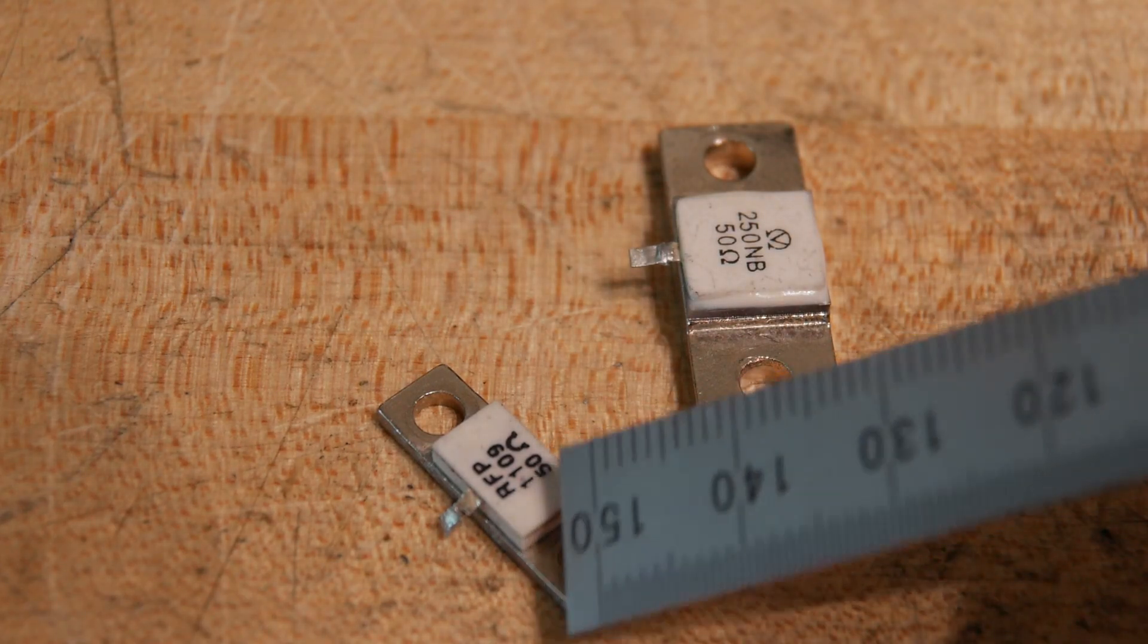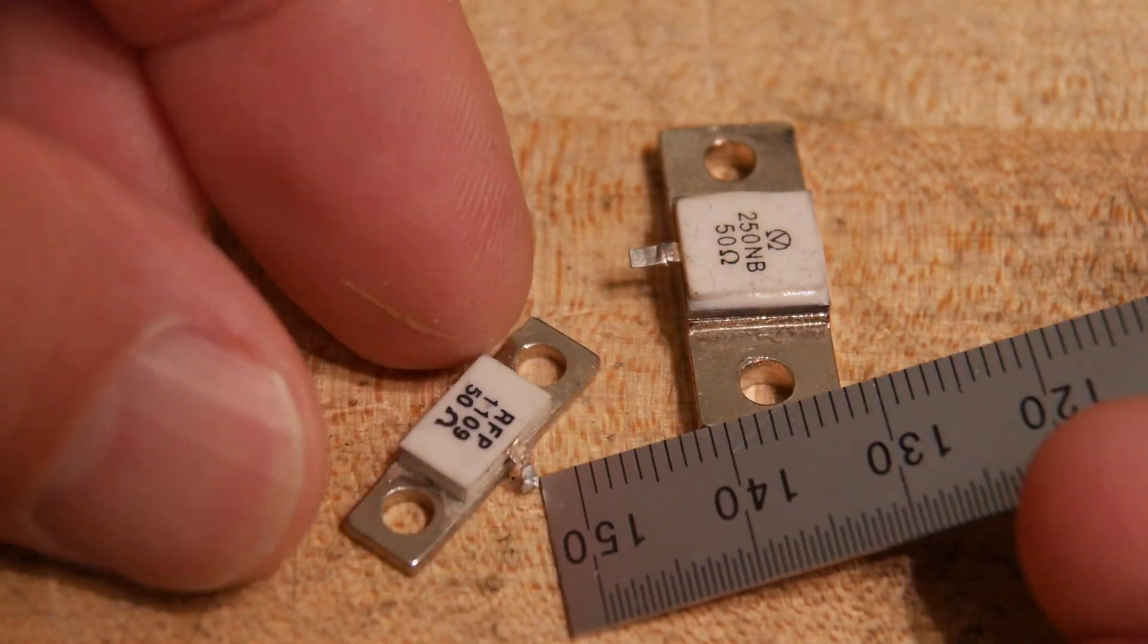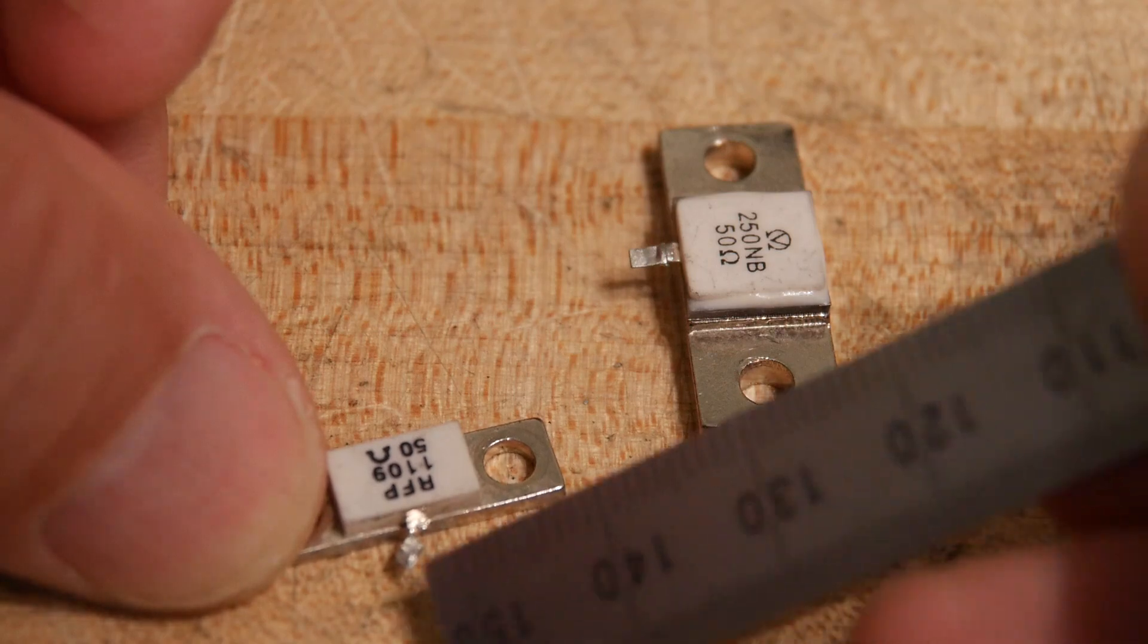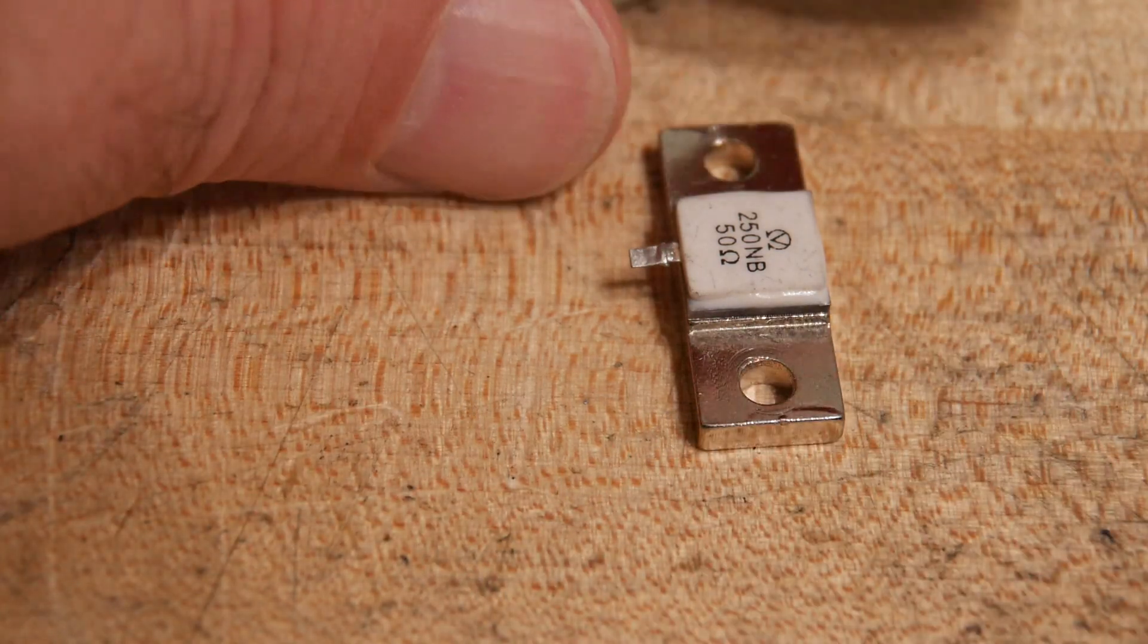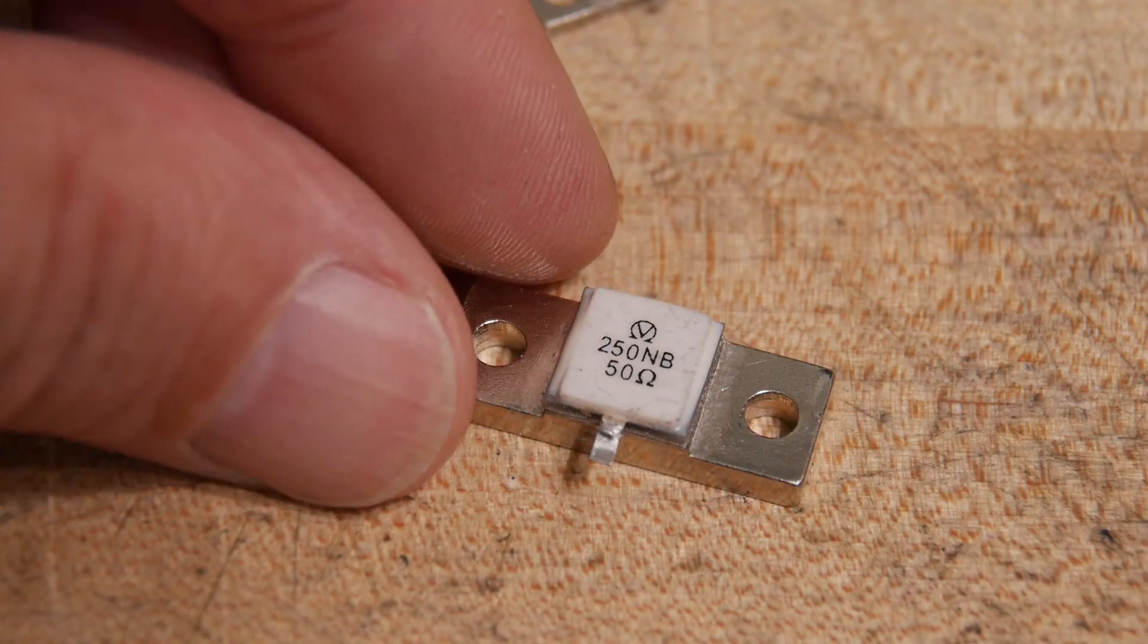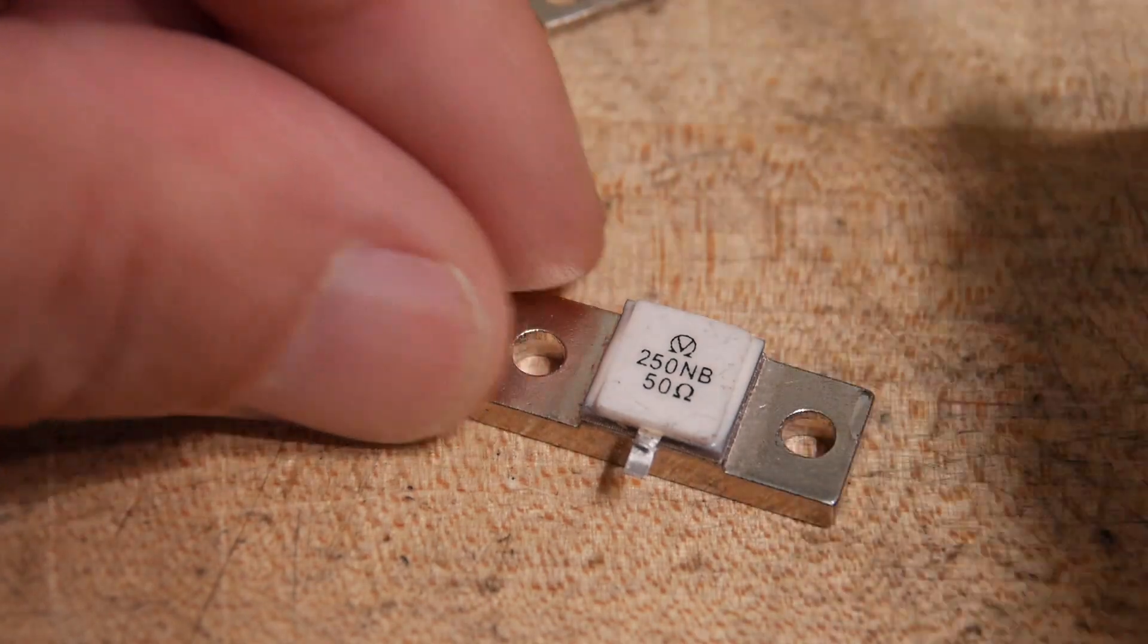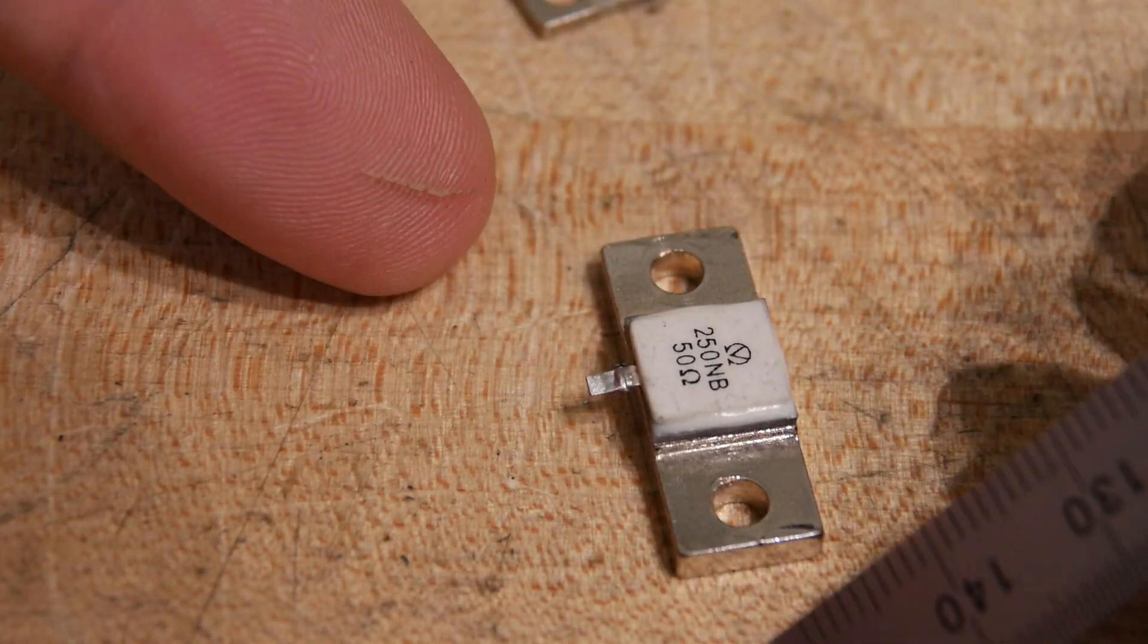It has this little tab sticking out that would go to the circuit. Now this one was sold as used and it definitely looks like it was used. You gotta be careful with these little flanges, they're going to break off someday. This one was sold as new in the package, untouched by human hands.